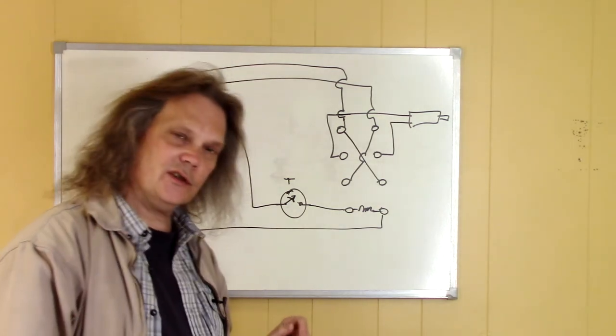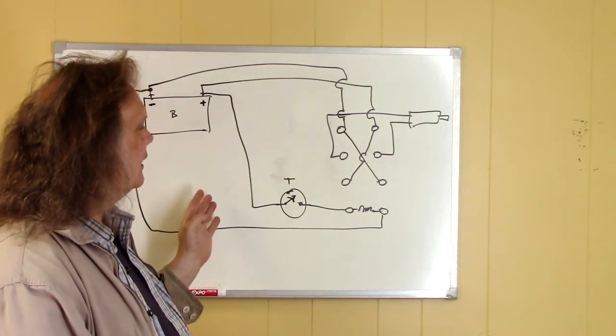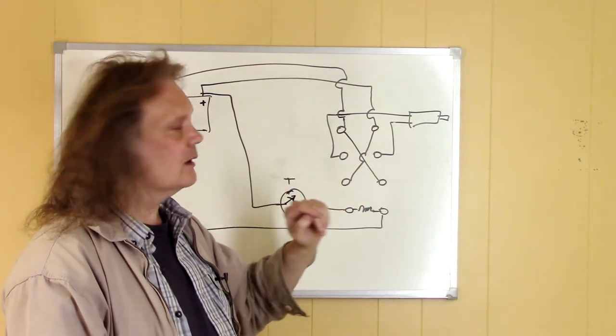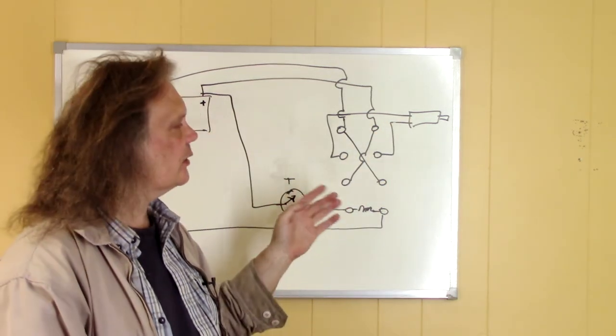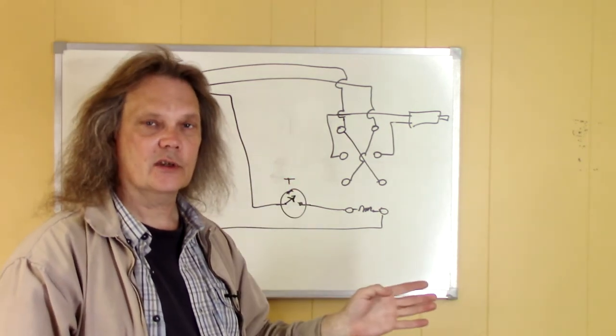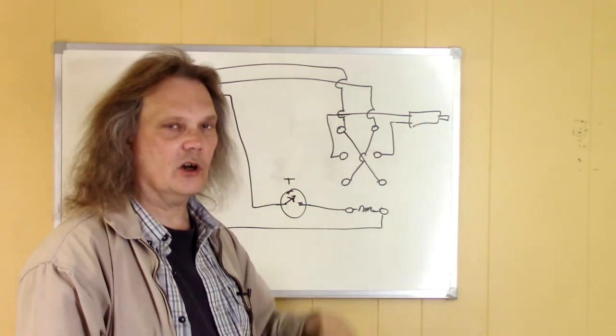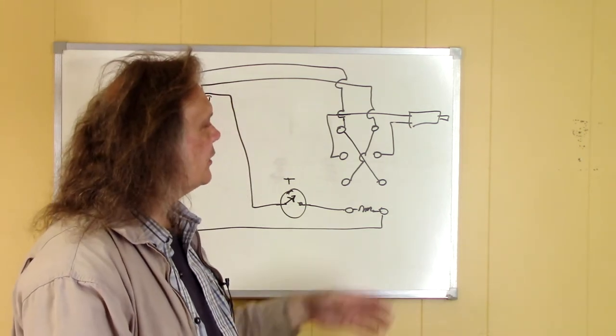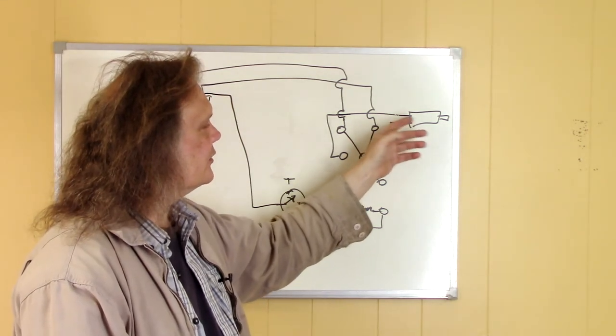Now if there's a downside to this setup it's that you always have power going out to the actuator which is okay because the actuator will go to its limits and its internal switch will turn it off and it'll just sit there and not consume any power but there's always power available on these leads going out there.